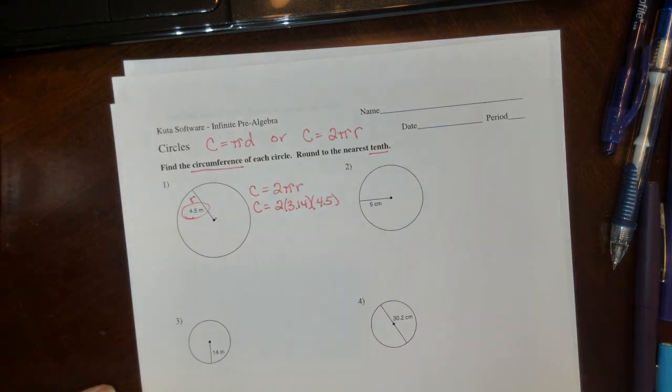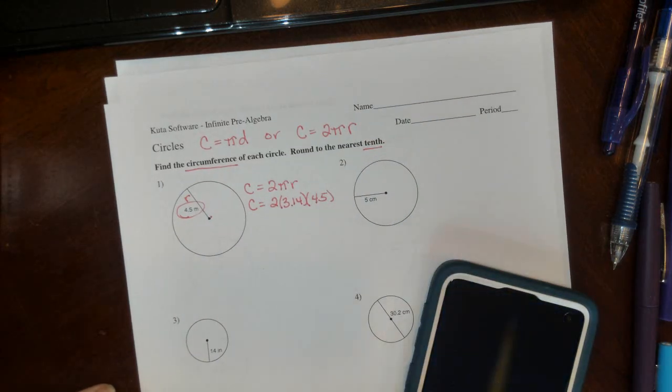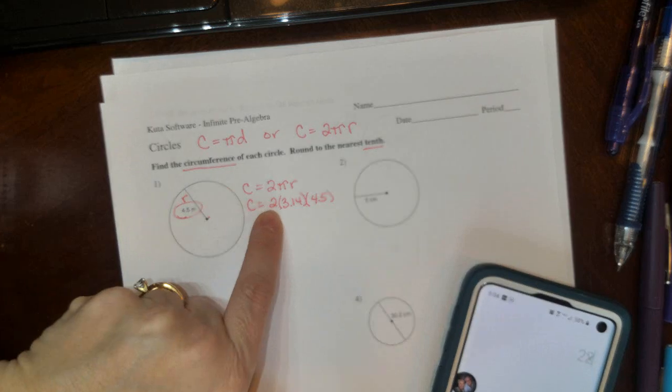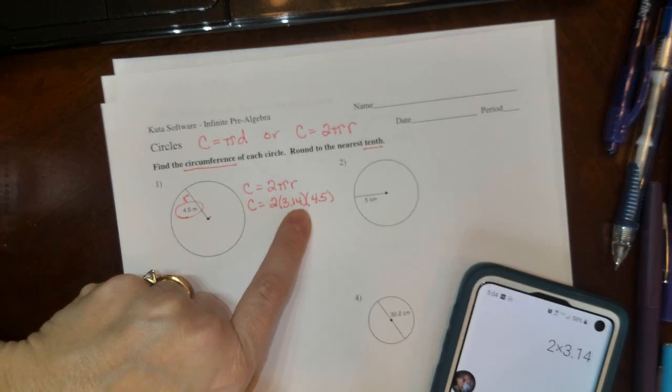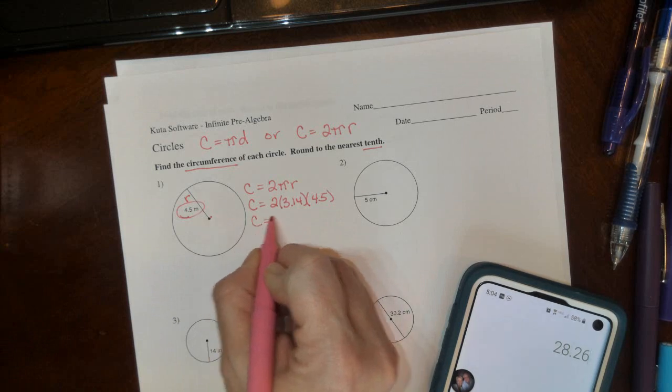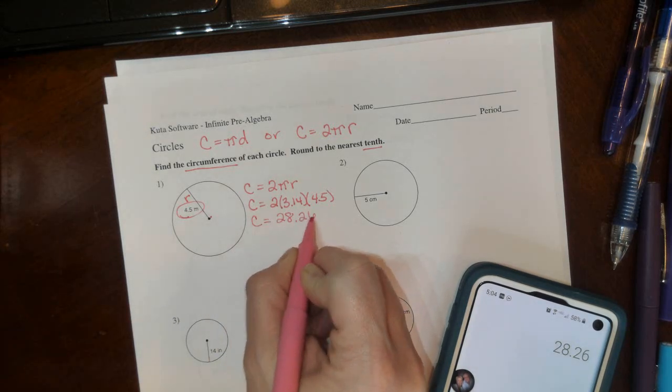Multiply them: 2 times 3.14 times 4.5. So we get 28.26.